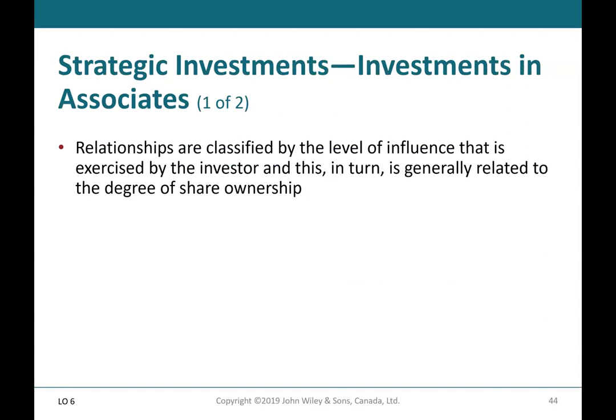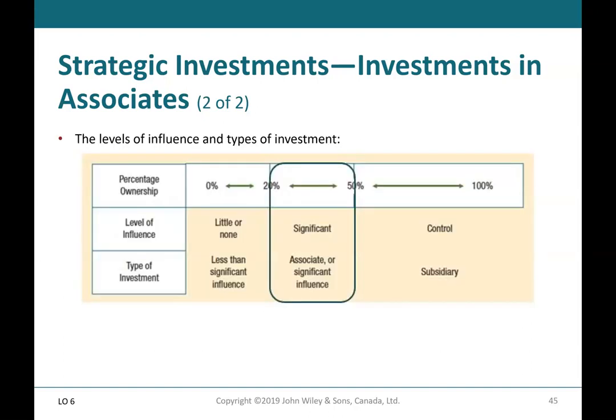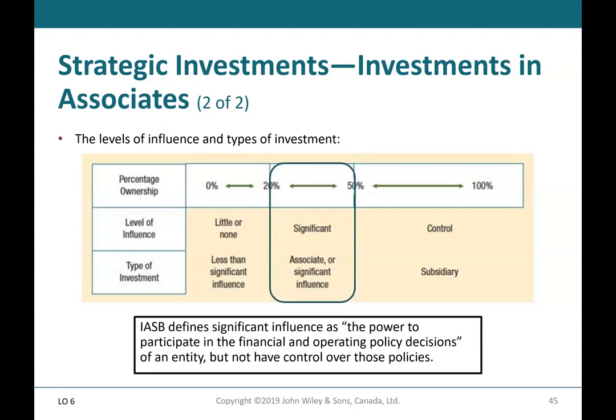Strategic Investments — Investments in Associates: relationships are classified by the level of influence exercised by the investor, which is generally related to the degree of share ownership. As common shares carry voting rights, the extent of influence becomes a factor in determining the appropriate accounting treatment. Ownership between 20–50% is considered significant influence, and these are classified as associate or significant influence investments. The IASB defines significant influence as the power to participate in financial and operating policy decisions of an entity but not have control over those policies.